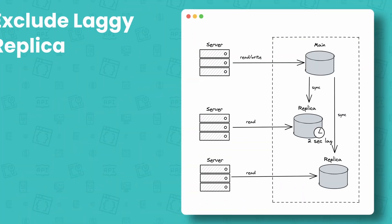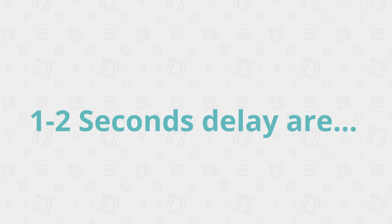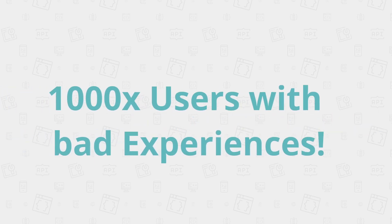So what did the smart engineers at GitHub come up with to mitigate the impact of those replication lags? The first action they took is already pretty genius. While they couldn't prevent lags from happening, they could prevent users from reading off laggy replicas. GitHub's system automatically puts aside those lagging replicas after a couple seconds of lagging, lets them catch their breath, and avoids sending read traffic their way until they have caught up. However, the few seconds it takes to set aside lagging replicas are still too much for GitHub's standard. A few seconds may still lead to thousands of users having a bad experience.